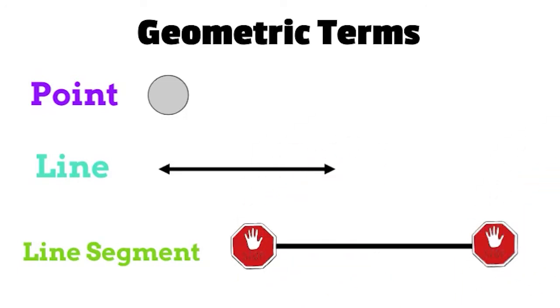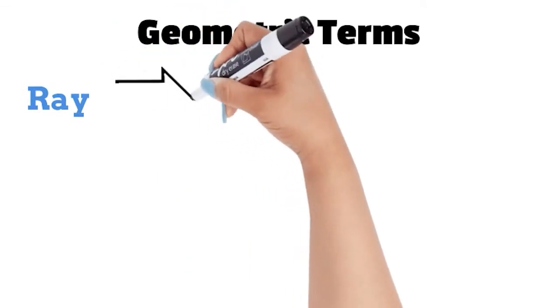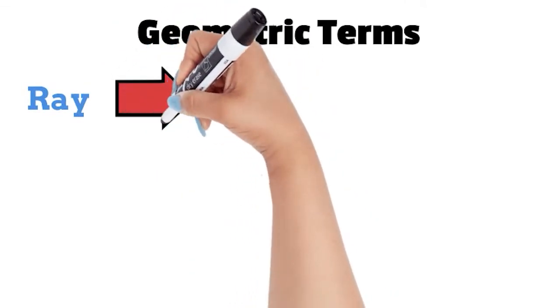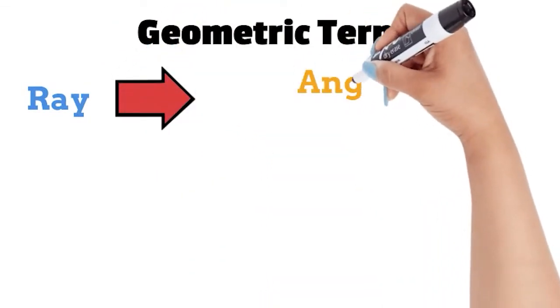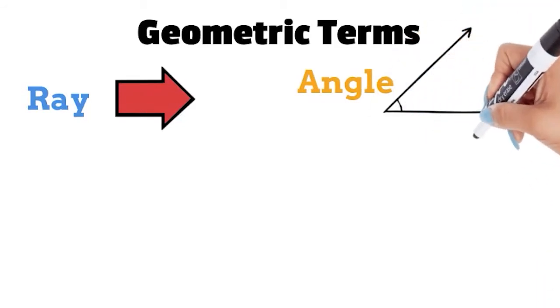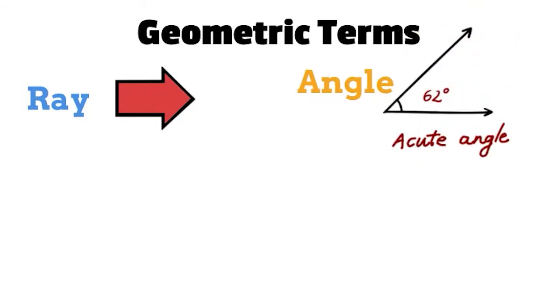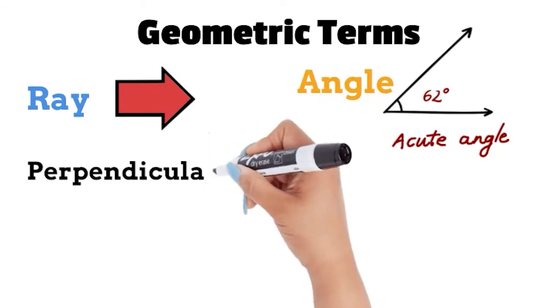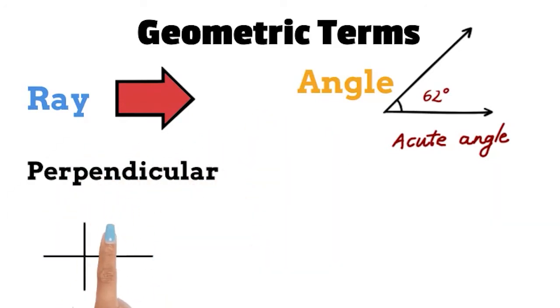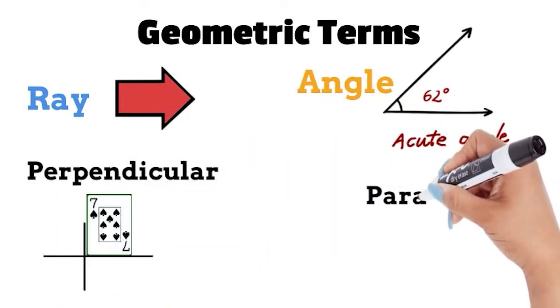Rays are a group of points forming a straight line with one endpoint. Angles are two line segments or rays connected by one endpoint. Perpendicular lines intersect and form a right angle.